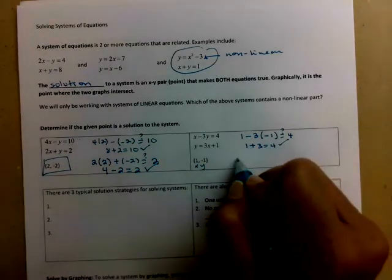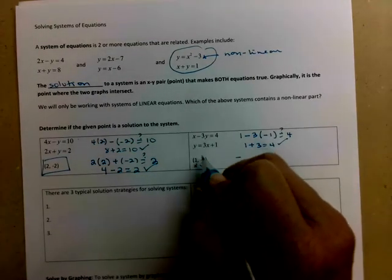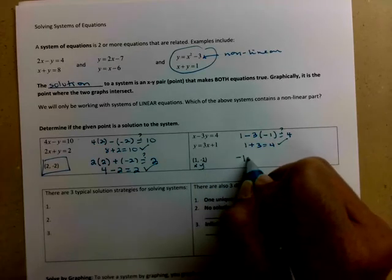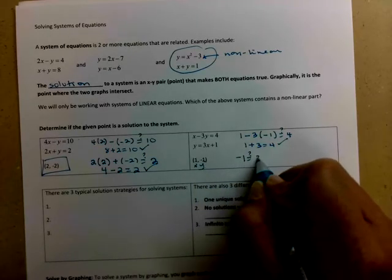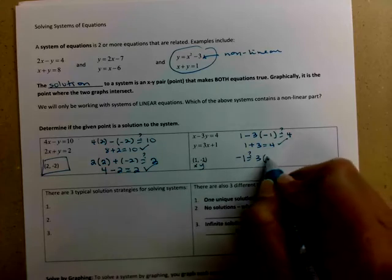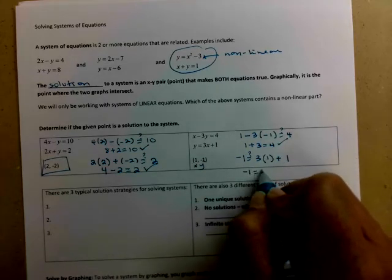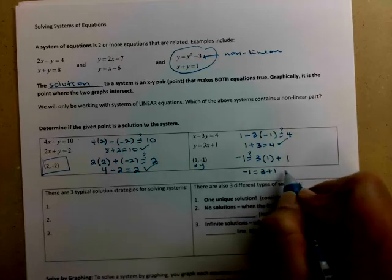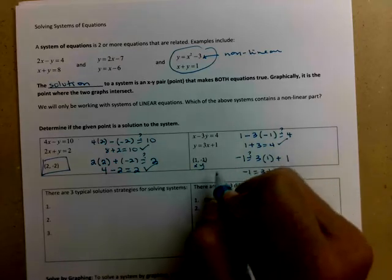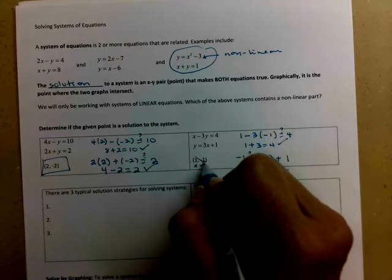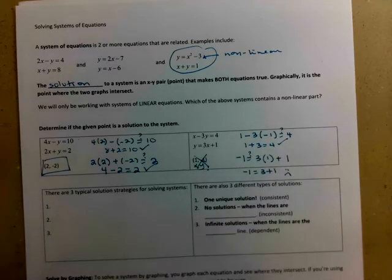So then checking the bottom equation, the second equation, so y gets played by negative 1, is that equal to 3 times positive 1 plus 1? Is negative 1 equal to 3 plus 1? It is not. So since it doesn't work in the second equation, it is not a solution to the system.